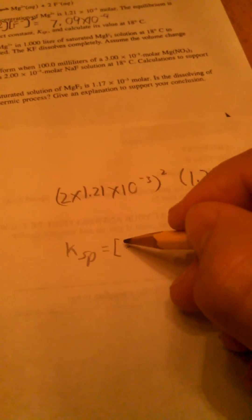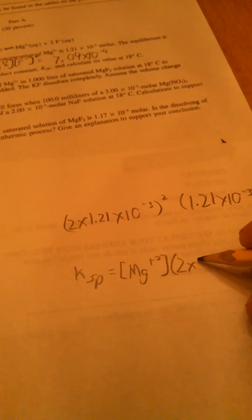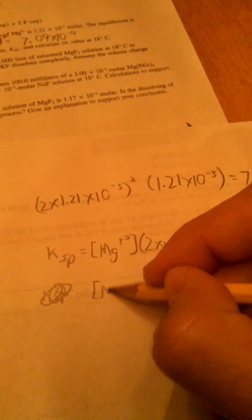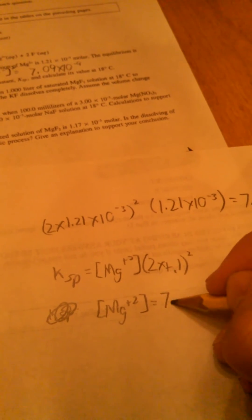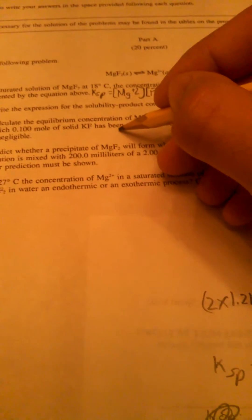To find that, you set up KSP equal to the magnesium ion concentration multiplied by the fluoride ion concentration, expressed as 2x plus 0.1 squared. The concentration of magnesium is equal to 7.09 times 10 to the negative 9 divided by 0.1 squared, which equals 7.09 times 10 to the negative 7 molar. That is the answer for part 2.